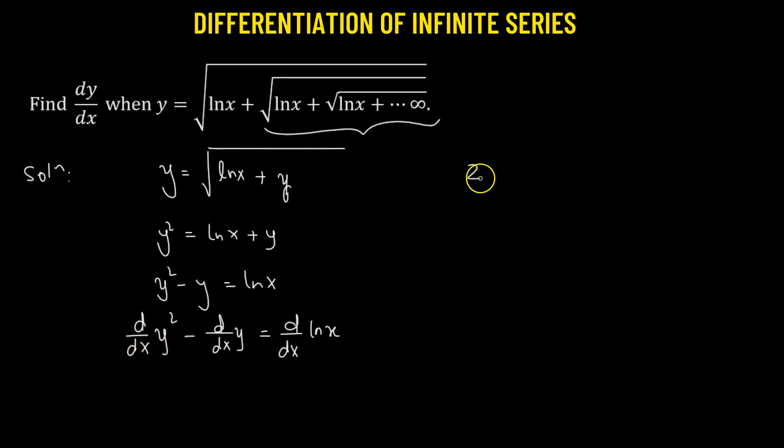we can use the power rule to get 2y. But since we have a y here instead of an x, we'll need to use the chain rule. We'll multiply it to derivative of y with respect to x minus derivative of y with respect to x equals to.